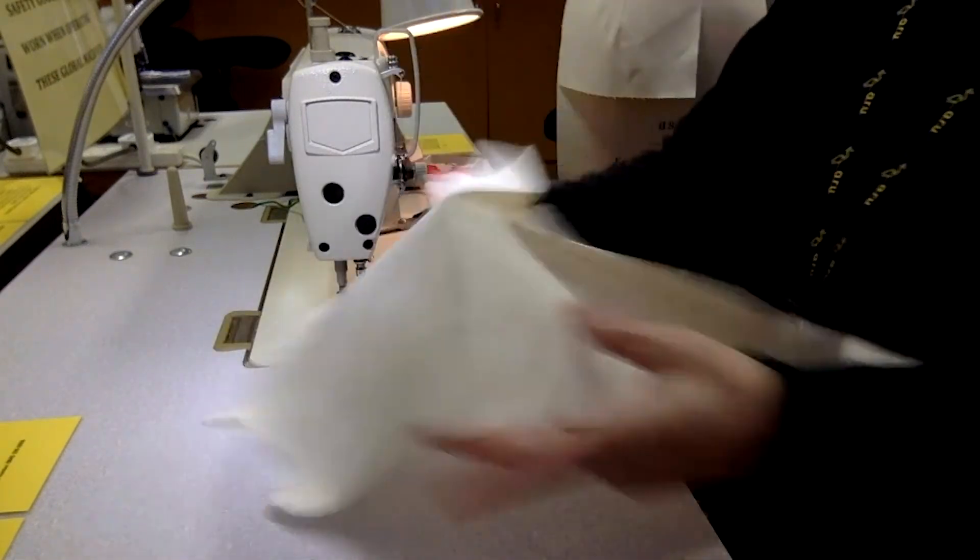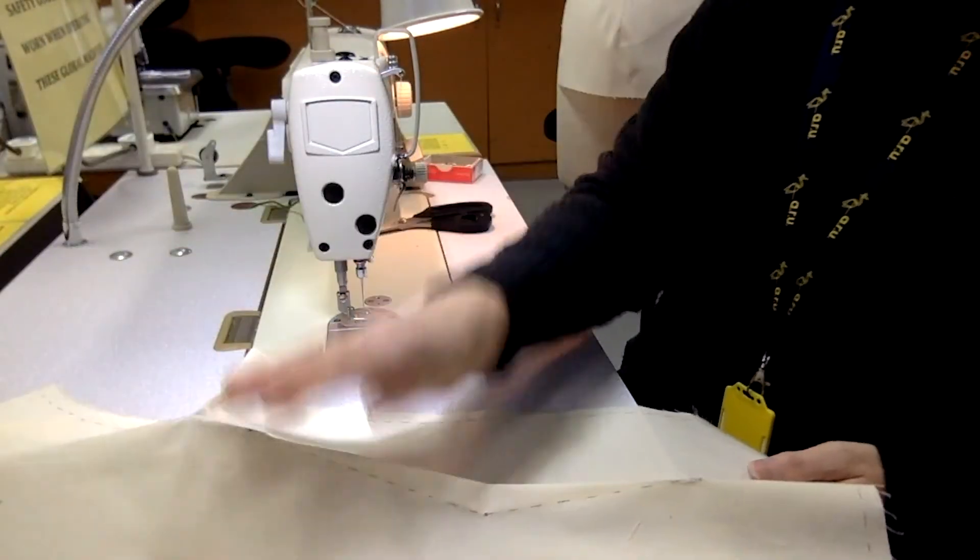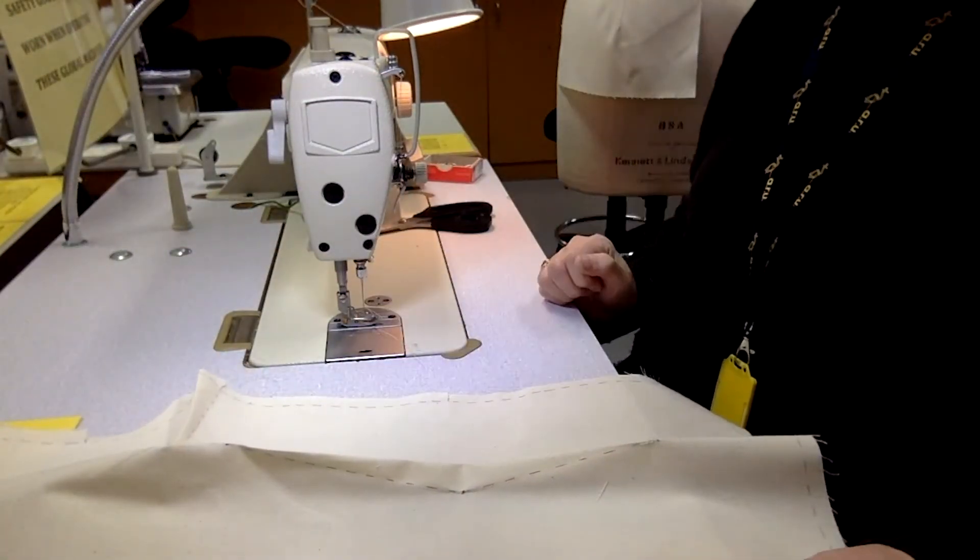So now you should have both your darts sewn. And you'd repeat this for the other side of your shirt and also the back pieces.